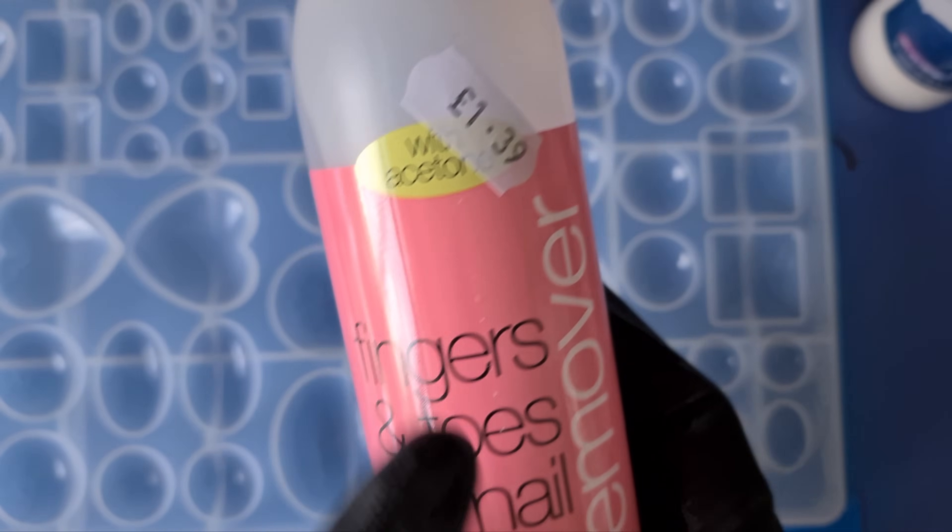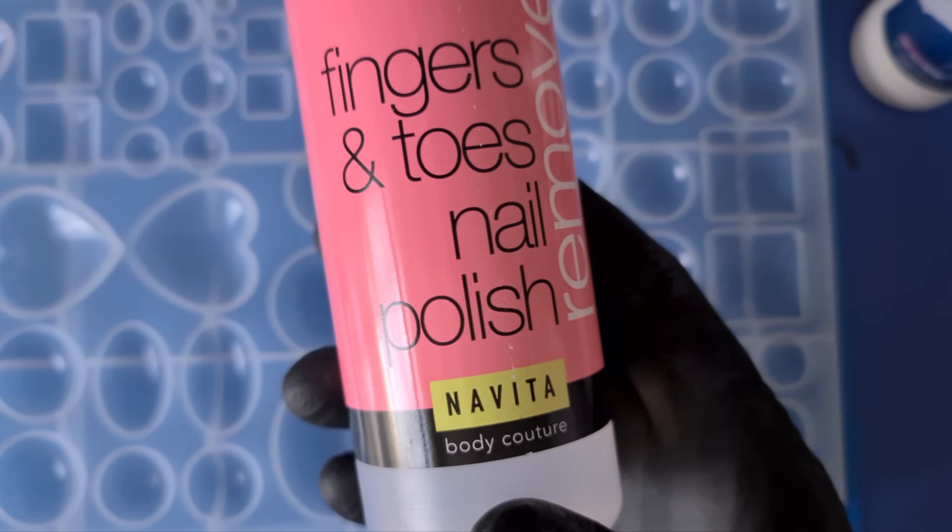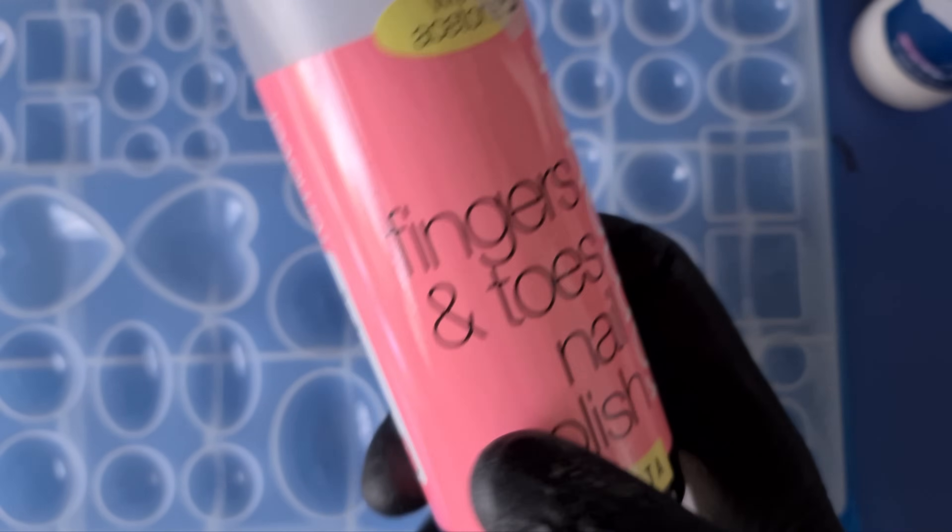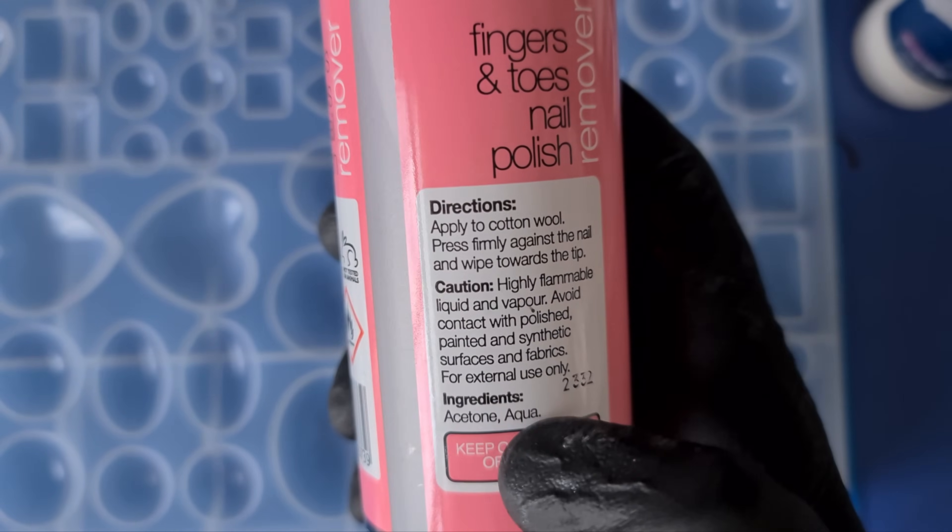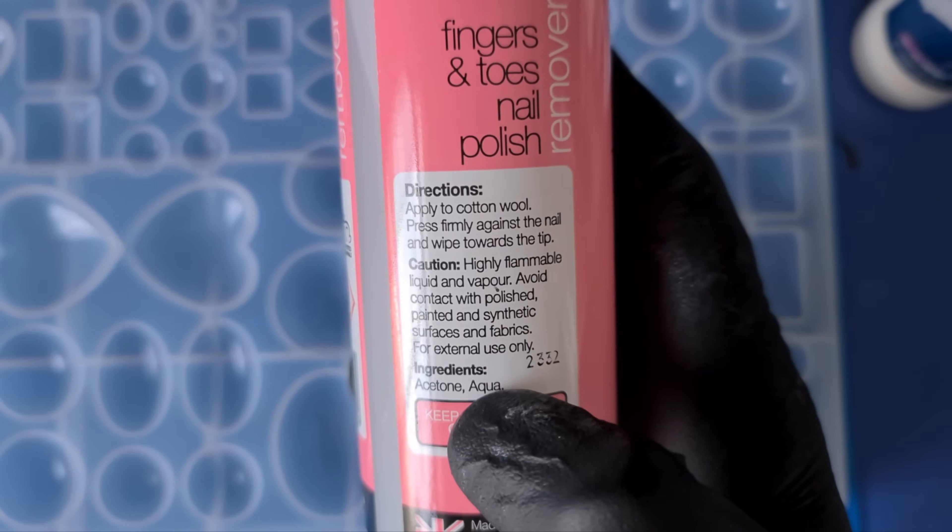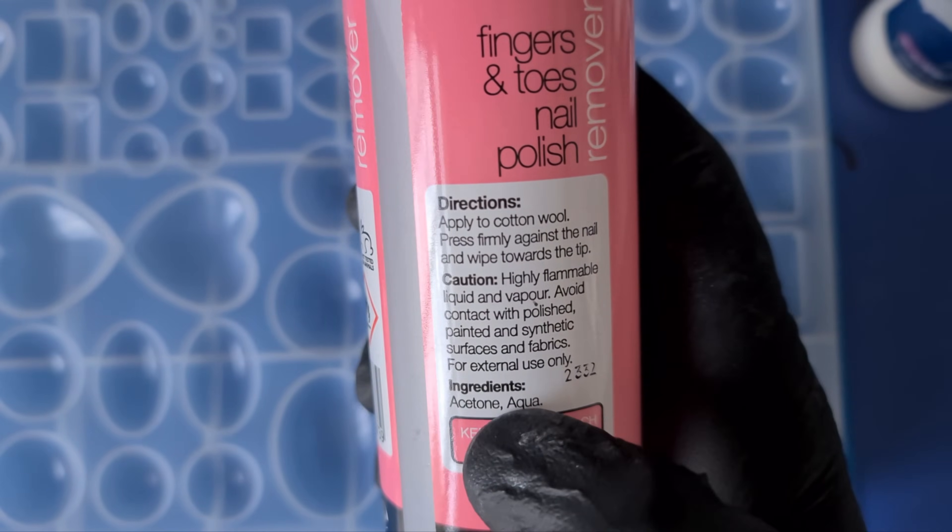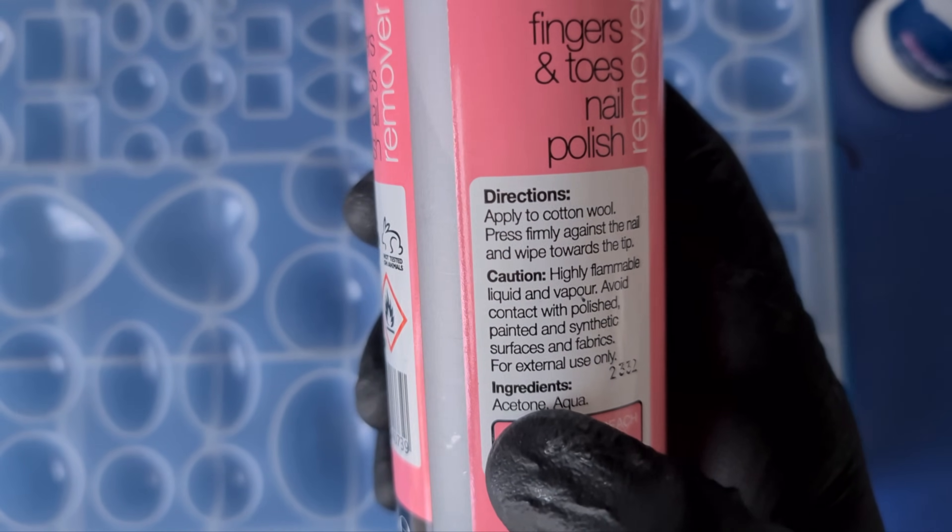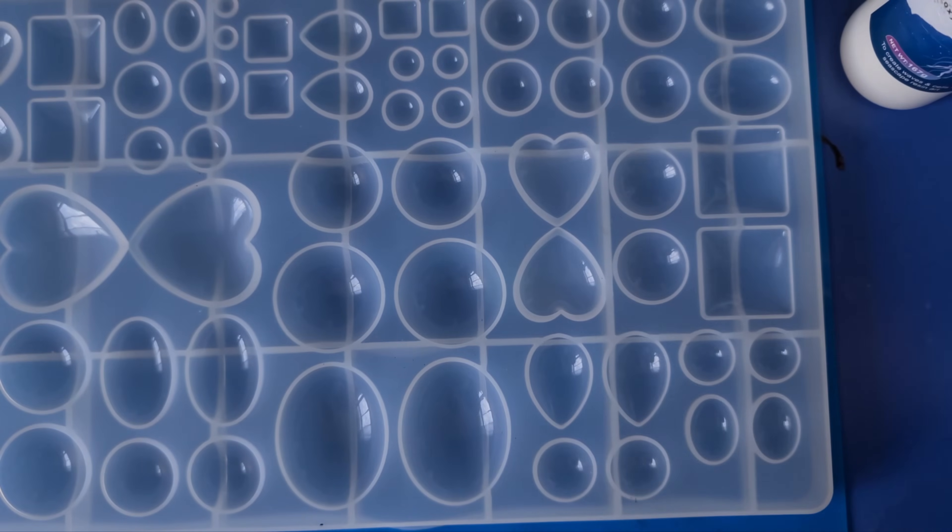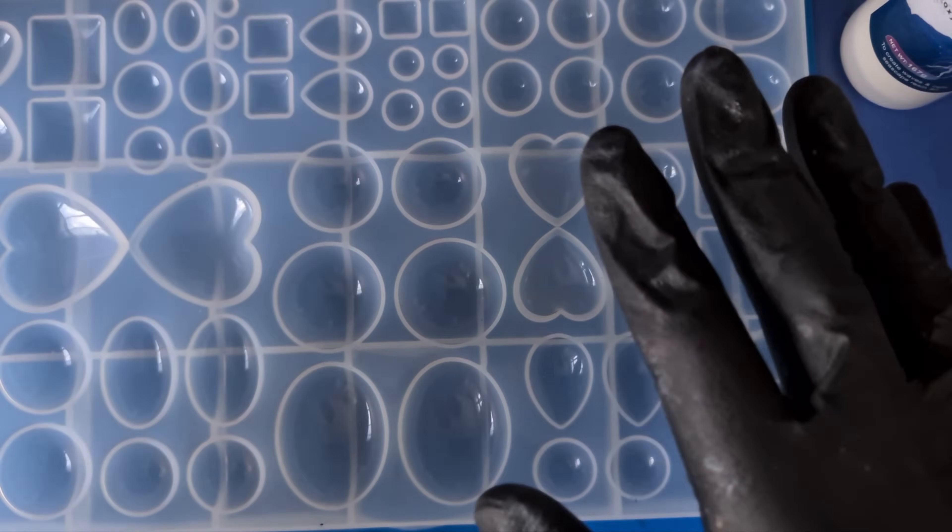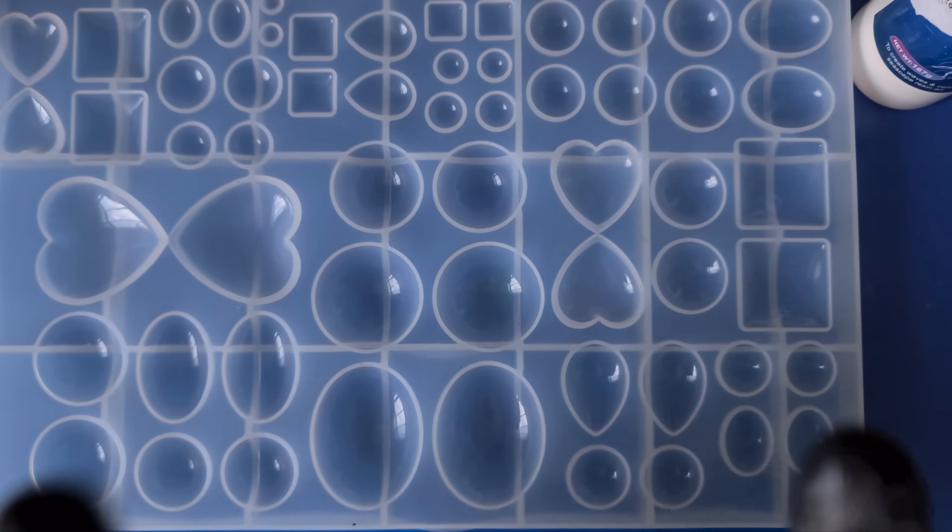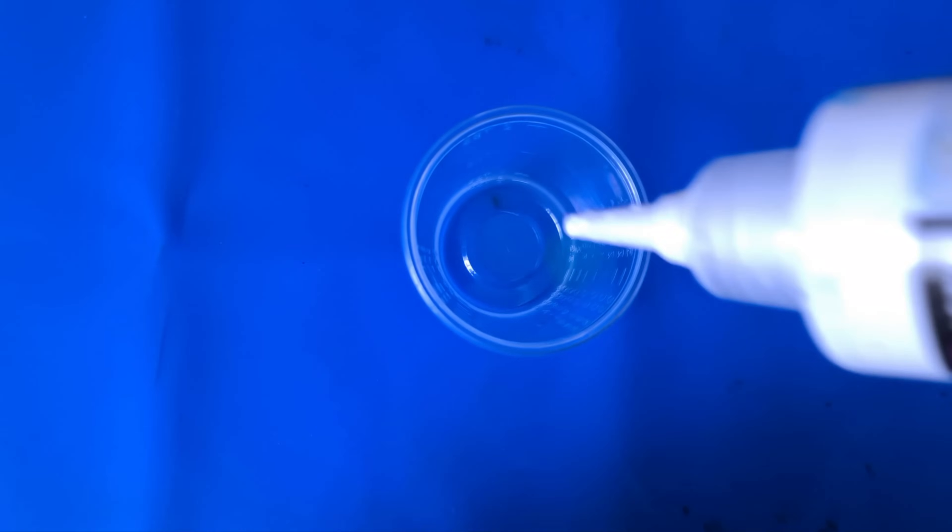And I've just got a really cheap acetone nail polish remover. So this one is a mix between acetone and aqua. Now aqua and resin really don't mix well, so I would recommend doing this with 100% acetone. Now you may be wondering why can't we do this with alcohol? Let me show you.